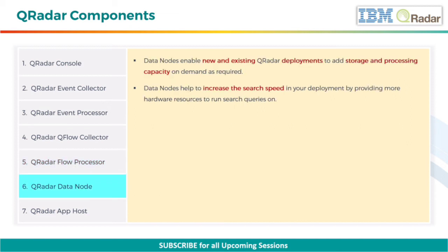Next, data nodes enable new and existing QRadar deployments to add storage and processing capacity on demand as required. Data nodes help to increase the search speed in your deployment by providing more hardware resources to run search queries on.